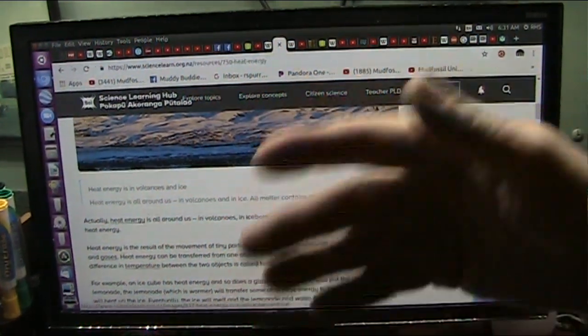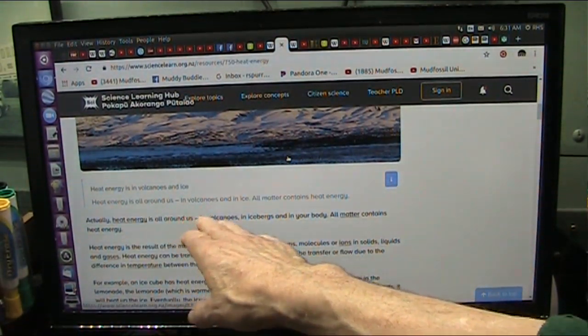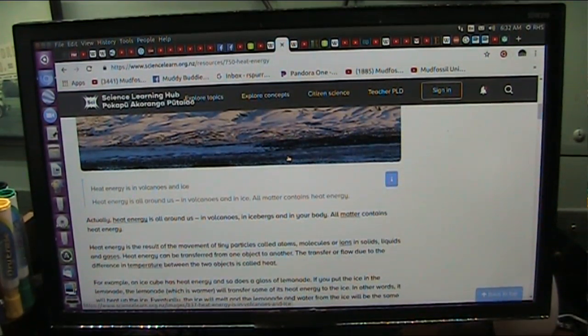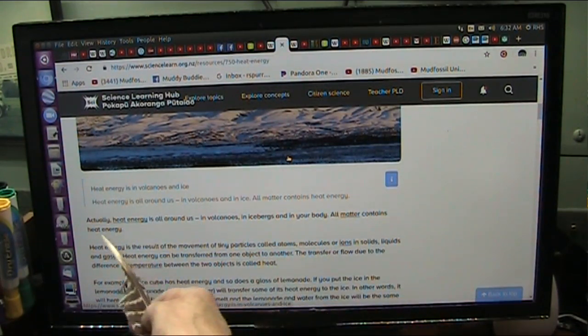Heat energy is the energy that's in volcanoes, it's in ice, right? Heat energy is all around us. Volcanoes, ice, all matter contains heat energy. Okay, I'll go with that. But what is it? Well, here, actually, heat energy is all around us in all these things. All matter contains heat energy.